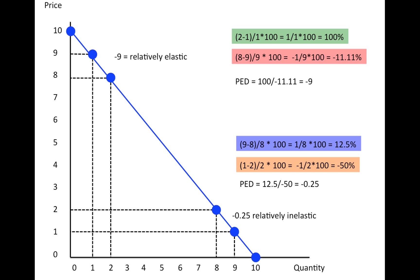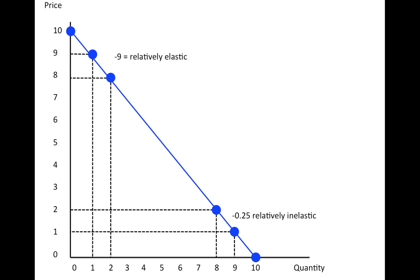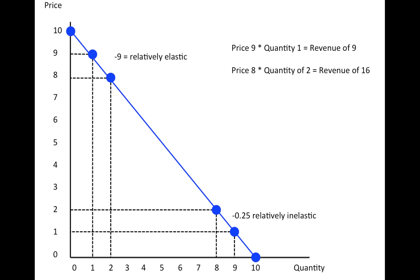This has consequences for firms, because firms will want to maximize their revenue, and revenue is maximized when the PED is equal to 1. When price equals 9, revenue equals 9 — price times quantity: 9 times 1 equals 9. When we lower the price, quantity increases relatively a lot: 8 times 2 equals 16, so we're clearly better off. If price equals 2 and quantity equals 8, revenue equals 16. If price equals 1 and quantity equals 9, revenue equals 9.